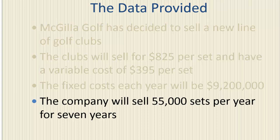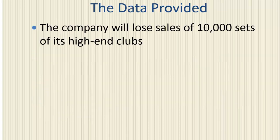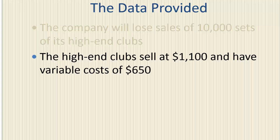The company is expected to sell 55,000 sets per year for seven years. A side effect of building these proposed units is that the company will lose sales of 10,000 sets of its high-end clubs. These high-end clubs sell at $1,100 per unit and have a variable cost of $650. This loss of sales is known as the cannibalization effect, or erosion, and should be considered in the evaluation of this project.